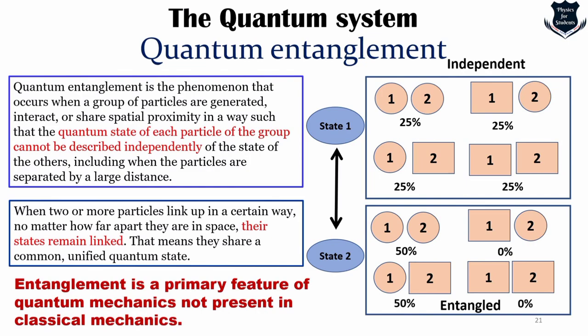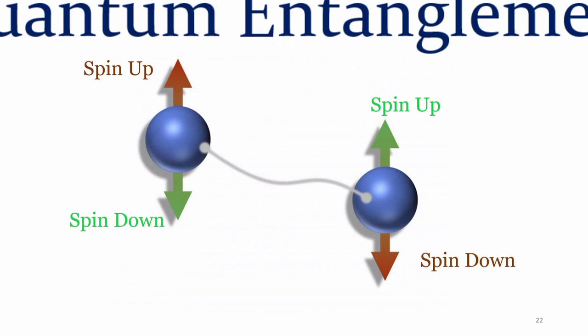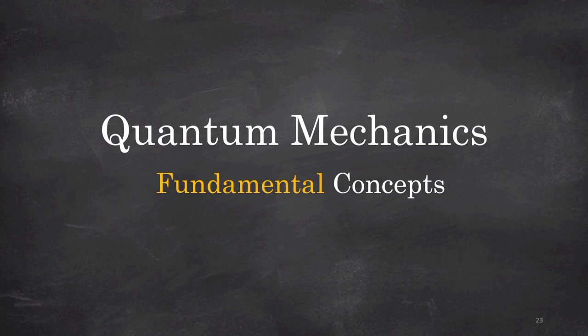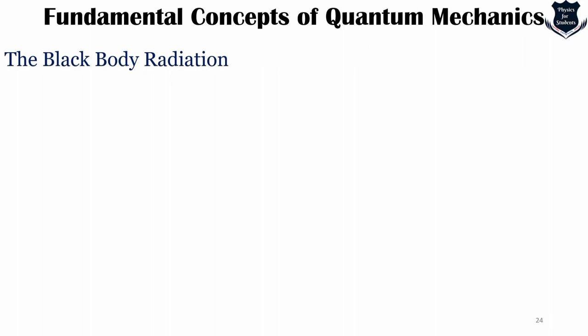Spin up and spin down is another example of quantum entanglement. Now we move to the central part: the fundamental concepts of quantum mechanics. We start with blackbody radiation. Thermal radiation is electromagnetic radiation emitted from the surface of an object due to its internal energy — when heated, it emits light.